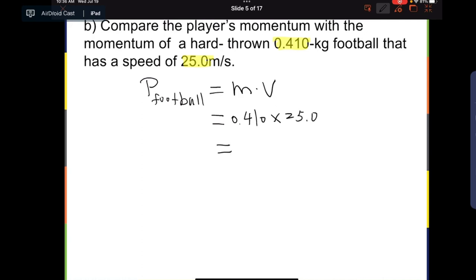And the answer is 10.25. However, because both numbers have three significant figures, we need to also keep the same number of significant figures. So the answer should be 10.3 kg meters per second.